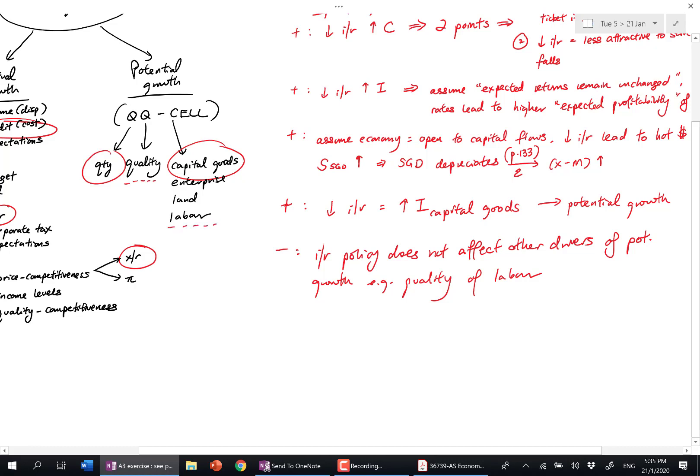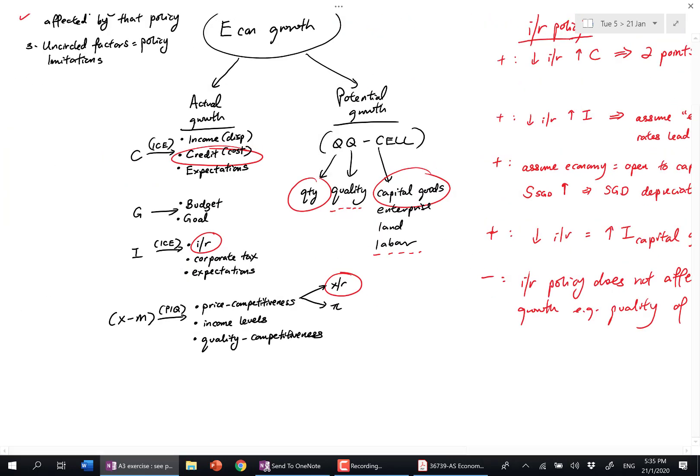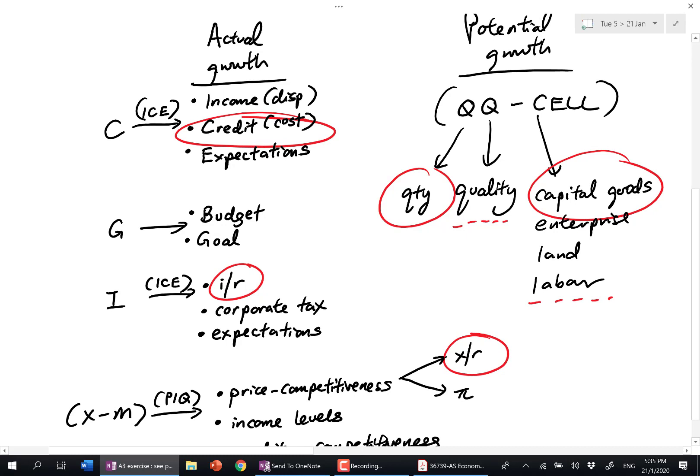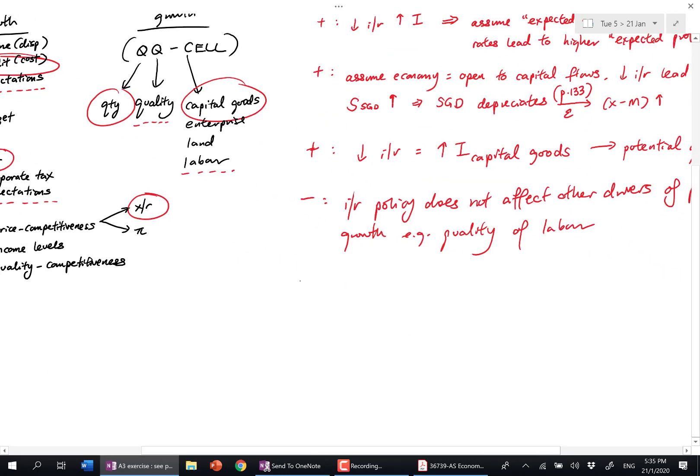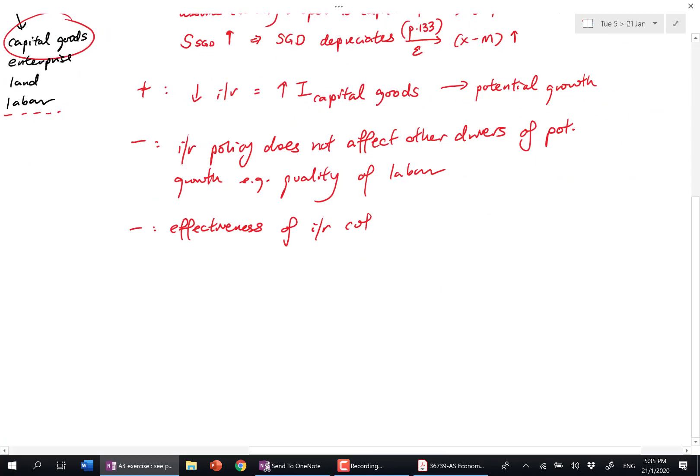Any other non-circled factors? Quality of labor, the other things like here - these things can also become policy limitations. So I'm going to say that the effectiveness of an interest rate cut, if I cut my interest rates, effectiveness in increasing C depends on expectations - the state of expectations.